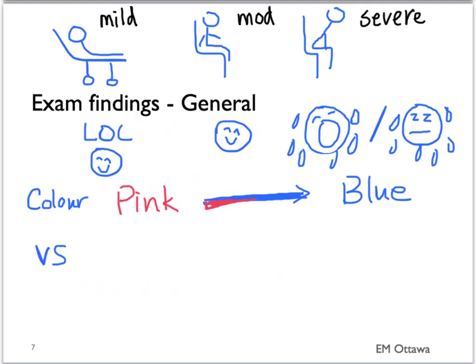In terms of vital signs, patients with mild exacerbation might be slightly tachypneic and tachycardic. Their oxygen saturation should be normal. As they get sicker, they become more tachycardic and more tachypneic and start to drop their sats.